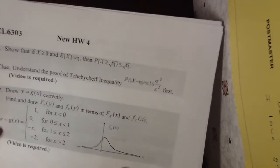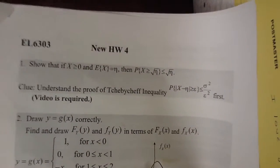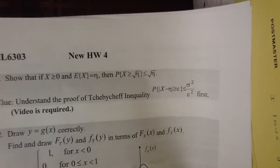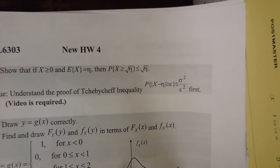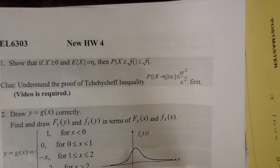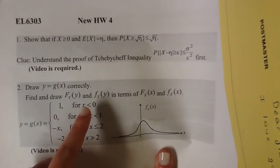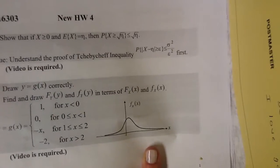Okay, beautiful. So the first one I really like — this is kind of a fun one. So it says: show that if x is greater than or equal to 0, and E(x) equals n — which is just the mean — then P(x ≥ √n) is less than or equal to √n. And it says to understand the Chebyshev inequality proof.